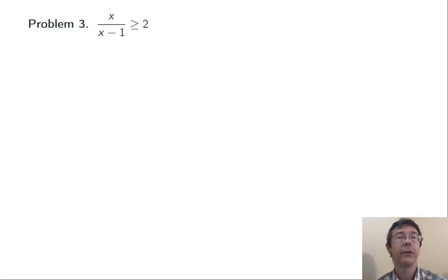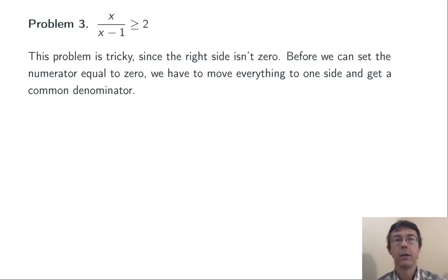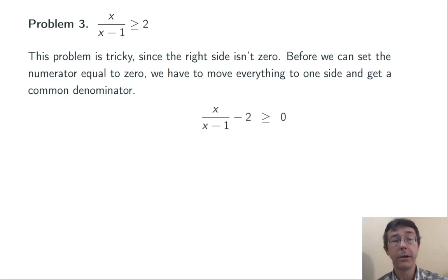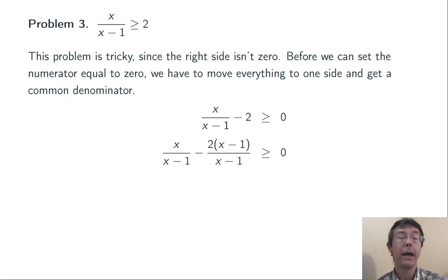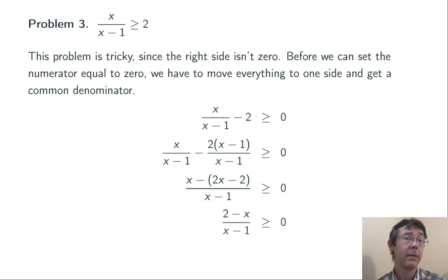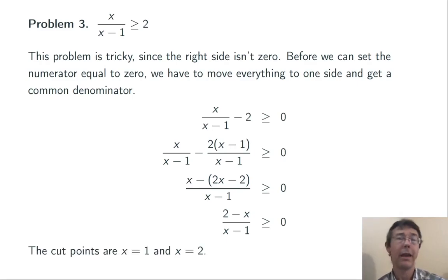Problem three: x over (x minus one) greater than or equal to two. This problem is a little tricky because the right-hand side is not zero. Before I can get cut points, I have to move everything to one side and get a common denominator. Let's subtract two from both sides. The common denominator is going to be x minus one, so I'm going to multiply two by (x minus one) over (x minus one). Now I can write it all over that common denominator. I've also distributed through the two to get 2x minus two. Distributing the negative sign and combining like terms, I get: (2 minus x) over (x minus one) greater than or equal to zero. Now the cut points are obvious: x equals one and x equals two.